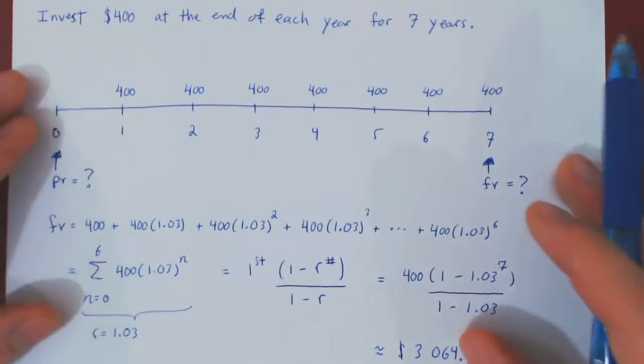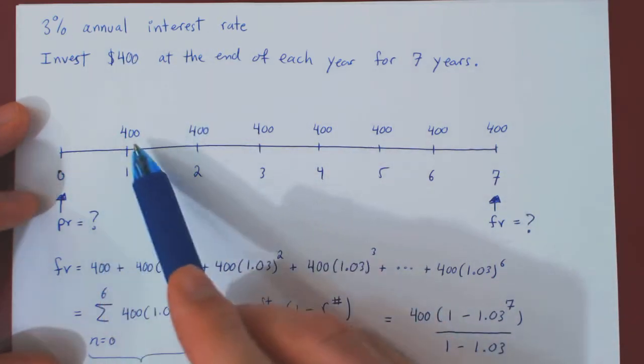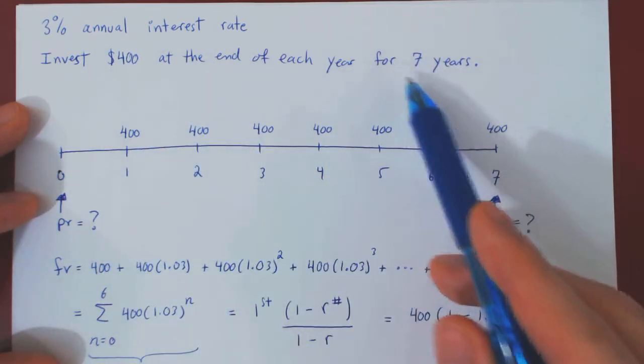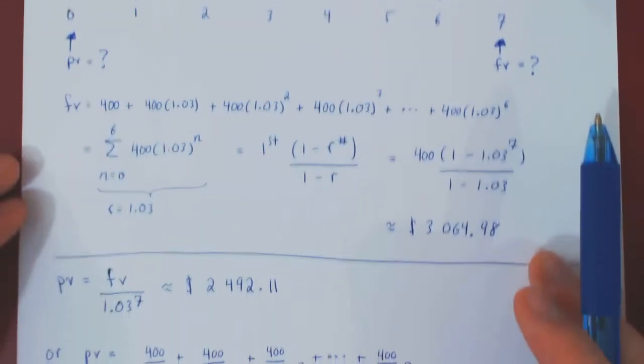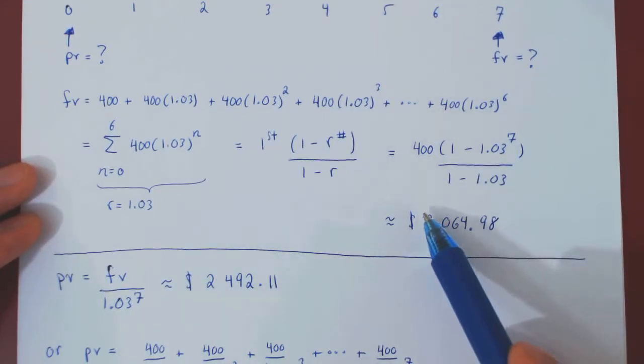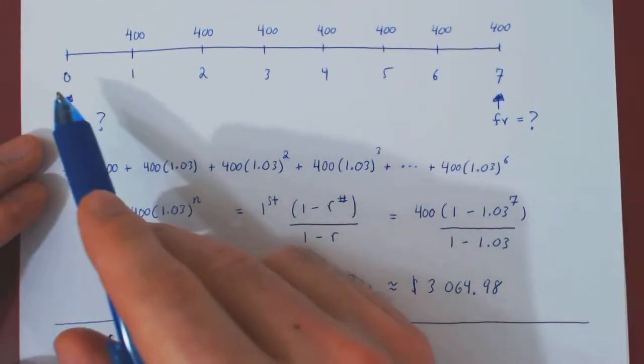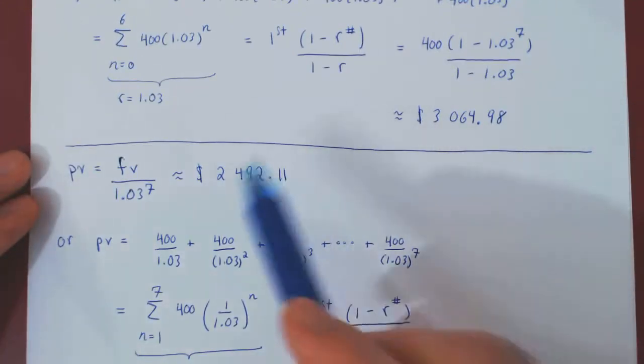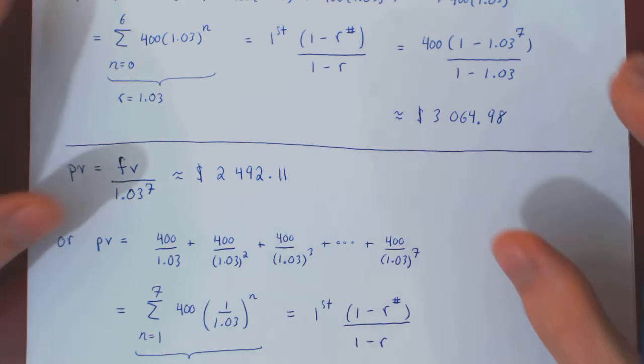So, to conclude, if we invest 400 dollars at the end of each year for 7 consecutive years, the final value is approximately 3,064 dollars, and the present value at time zero is approximately 2,492 dollars and 11 cents.